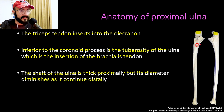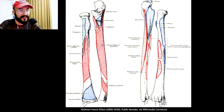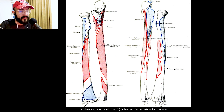The shaft of the ulna is thick proximally but its diameter diminishes as it continues distally. These pictures show the muscle attachments on the radius and ulna. Proximally on the ulna in the anterior view, we can see the brachialis inserting into the ulnar tuberosity below the coronoid process, and the supinator muscle inserting medially.